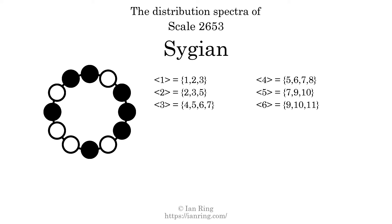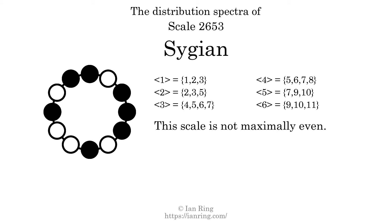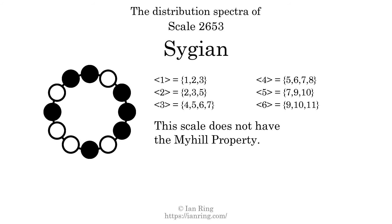The spectrum variation is the sum of all the widths, divided by the number of tones. The spectrum variation of this scale is 2.286. Since the variation is greater than zero, this indicates that the scale is not perfectly even. The highest spectrum width is three. Since this is greater than one, we know that this scale is not maximally even. If every spectrum has exactly two specific intervals, we call that the Myhill property. This scale does not have the Myhill property. Since the generic interval ranges overlap, this scale is an improper scale.